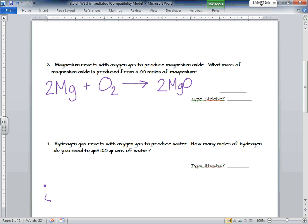It says, what mass of magnesium oxide is produced from four moles of magnesium? I am looking for the mass of magnesium oxide. And I am given four moles of magnesium. This type of stoichiometry, we call it mole to mass, because we are given the moles and we are finding the mass.